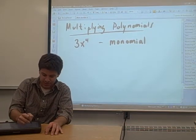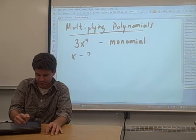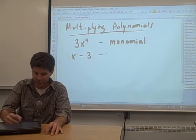If you have a polynomial that has two terms in it, say x minus 3, there's two terms there, that's called a binomial.